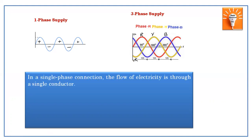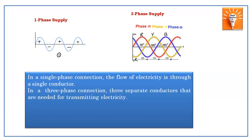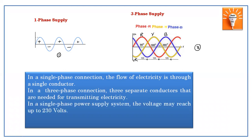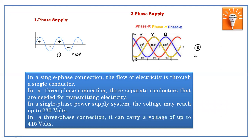In a single phase connection, electricity flows through only one conductor — only one conductor is required to transmit electric power. While in the case of three phase connection, three conductors are required. In single phase power supply, the voltage may reach up to 230 volts. While in three phase, the supply voltage is up to 415 volts. So single phase is 230 volts with one wire, and three phase is 415 volts with three conductors.